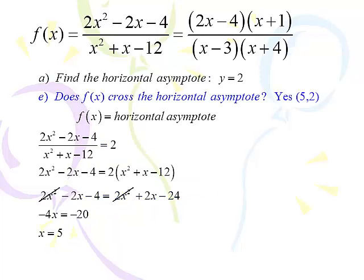The only time we ask this question is if the horizontal asymptote is not zero. If the horizontal asymptote is zero, we answer this when we determine the x-intercepts. When the horizontal asymptote is something other than zero, we need to find this out. That's another point — let's get graphing.